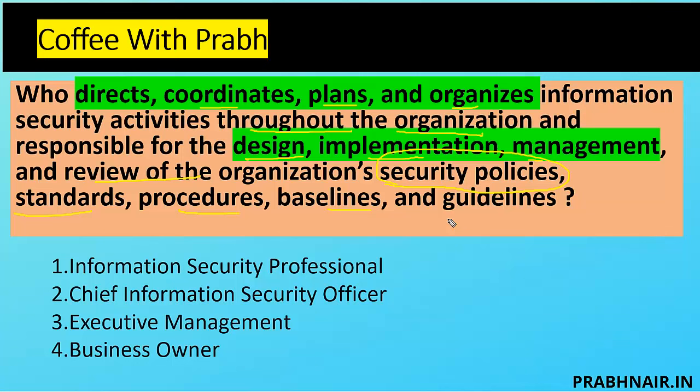Looking at the options: information security professional creates a policy and submits it to the CISO, who gets approval from management, and then with the help of the information security professional, they implement. Every organization has a strategy, which is divided into tactical plans, then operational plans. The security professional works at the tactical level and coordinates with the CISO. The CISO gets approval from executive management on the policies. The security professional receives instructions and implements the policy in the organization.